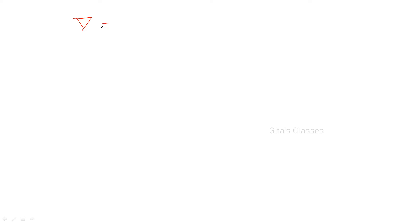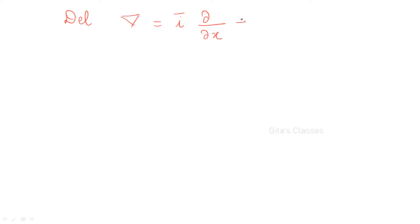In the first class, I asked you to remember this symbol — del. Del is denoted by this symbol, and you have to remember this is an operator which is given by i into ∂/∂x plus j into ∂/∂y plus k into ∂/∂z. This is an operator.